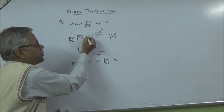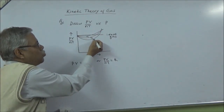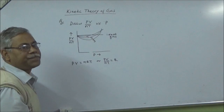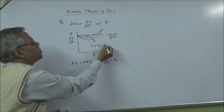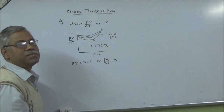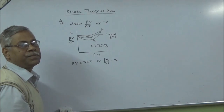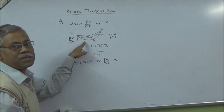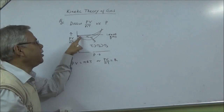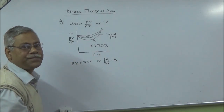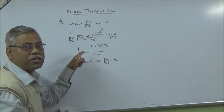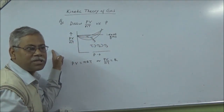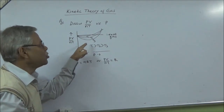Three graphs are drawn for three different temperatures T1, T2, and T3, where T1 > T2 > T3. The variation shows that PV/nT is not constant for a real gas — it varies.